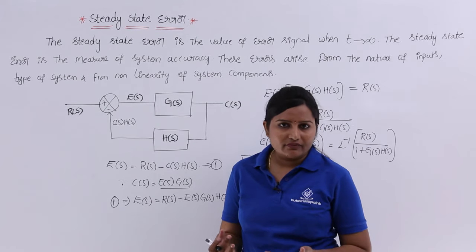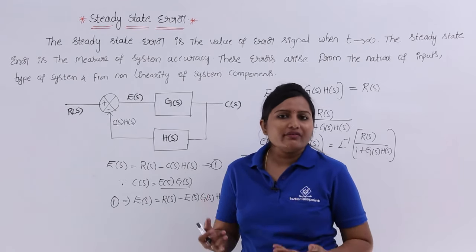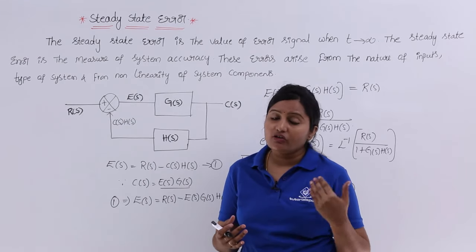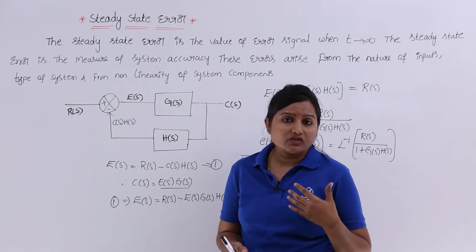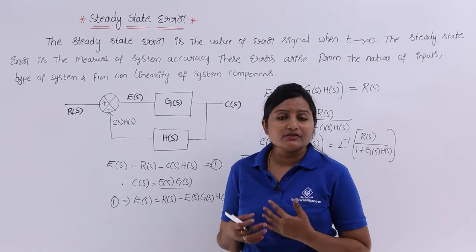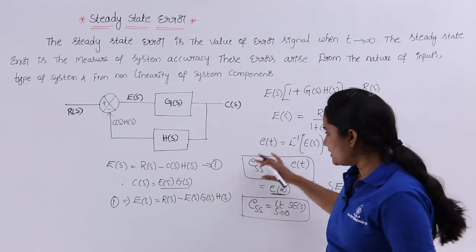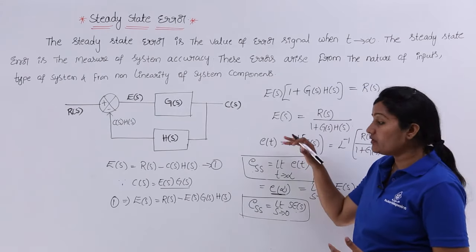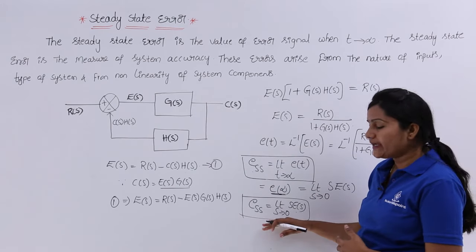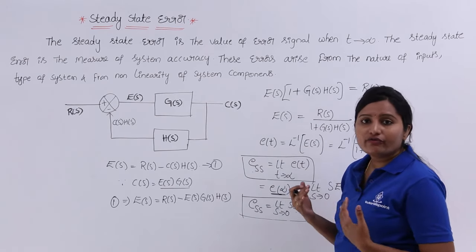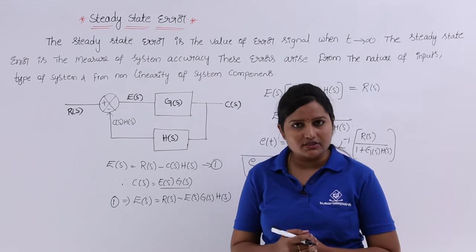The steady-state error defines the accuracy of the system. We get this error because of the nature of the input, the type of system, and non-linearities of the components. To calculate this error, we first define the error signal E(s), and then by taking T→∞ or applying the final value theorem, we obtain the steady-state error of the system.